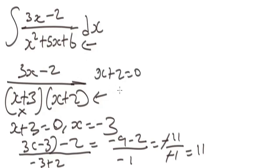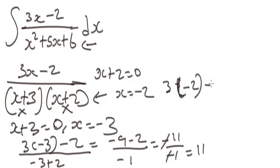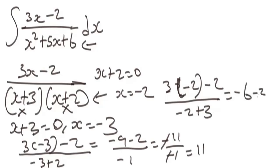Now equate x + 2 to zero, so x = -2. Substitute -2 into the expression but not into the factor (x + 2): 3(-2) - 2 over (-2 + 3) = -6 - 2 over 1 = -8 over 1, which gives us -8.